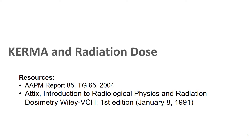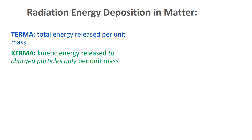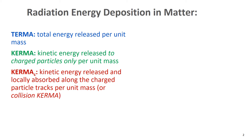Hello and welcome to the video. In this video we're going to talk about KERMA and radiation dose. TERMA is the total energy released per unit mass. KERMA is the kinetic energy released to charged particles only, per unit mass. And collision KERMA is the kinetic energy released and locally absorbed along the charged particle tracks, per unit mass.